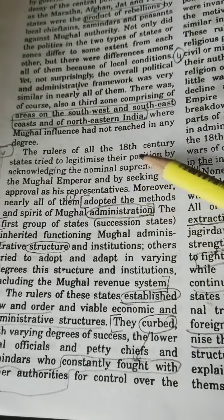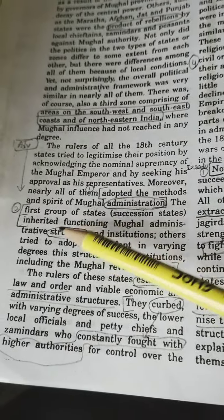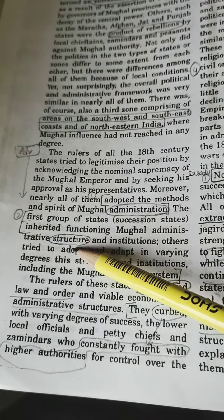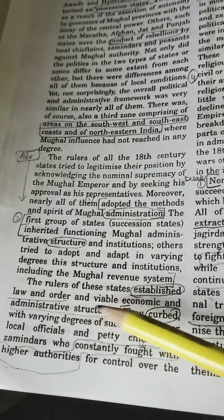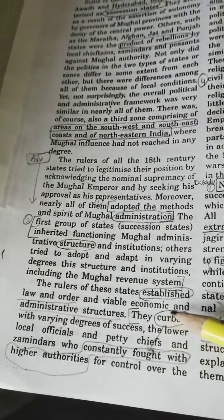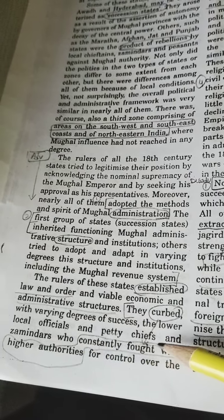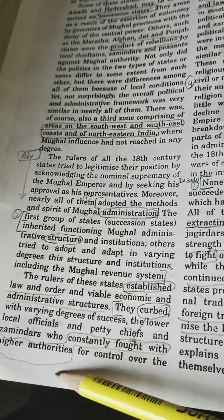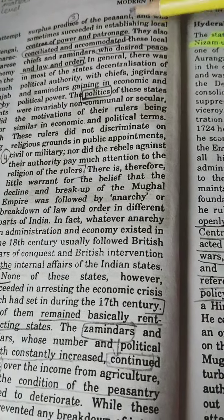Rulers of the 18th century tried to legitimize their position, and nearly all of them adopted the methods and spirit of Mughal administration. The first group of states inherited a functioning Mughal administrative structure and institutions. The rulers established law and order, viable economic and administrative structures, and curbed local officials, petty chiefs, and zamindars who constantly fought for control over the surplus produce of the peasantry.